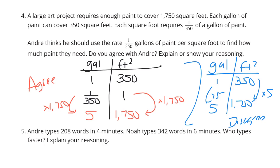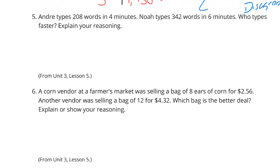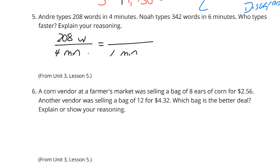Andre types 208 words in 4 minutes. His friend Noah types 242 words in 6 minutes. Who types faster? Let's find how many words they each type in a minute. For Andre: 208 words divided by 4 minutes equals 52 words per minute.